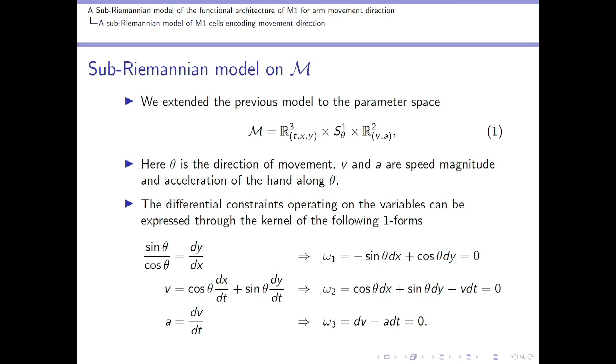We started our model by fixing a parameter at a purely kinematic space, where we consider the time, the positions, and movement direction theta, and also speed and acceleration along the movement direction theta, which are also variables encoded in M1. Added to the feature space, we considered the differential constraints operating on the variables. For example, if theta is the movement direction, then the tangent of theta can be expressed also as the derivative of y with respect to x, and hence giving rise to the one-form omega 1.